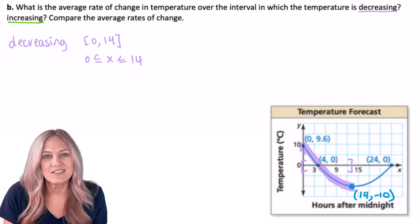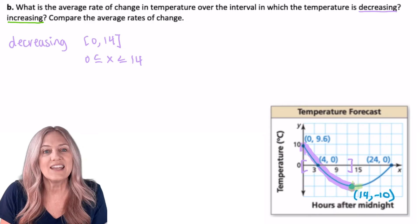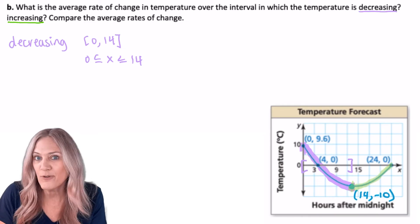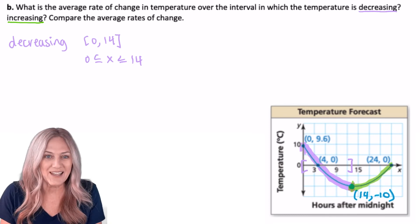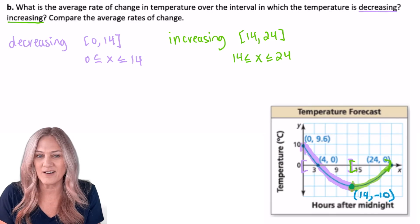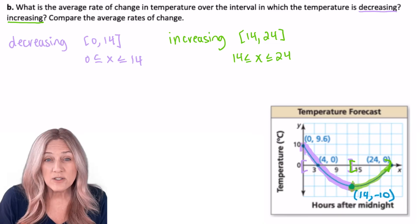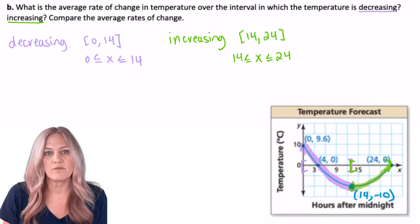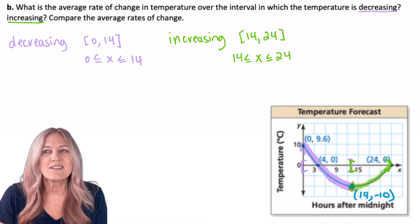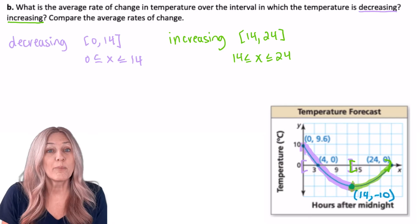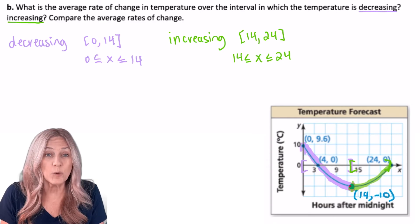And then what happens at the vertex? Well, right after that, we see that the graph starts to increase. And it increases all the way through 24 hours after midnight. So the graph and the temperatures are increasing from 14 to 24. Remember that interval of increase is the x coordinates. So let's look at the interval where the temperatures are decreasing from 0 to 14. The average rate of change will mean what is the average rate of change of the temperature per hour after midnight.